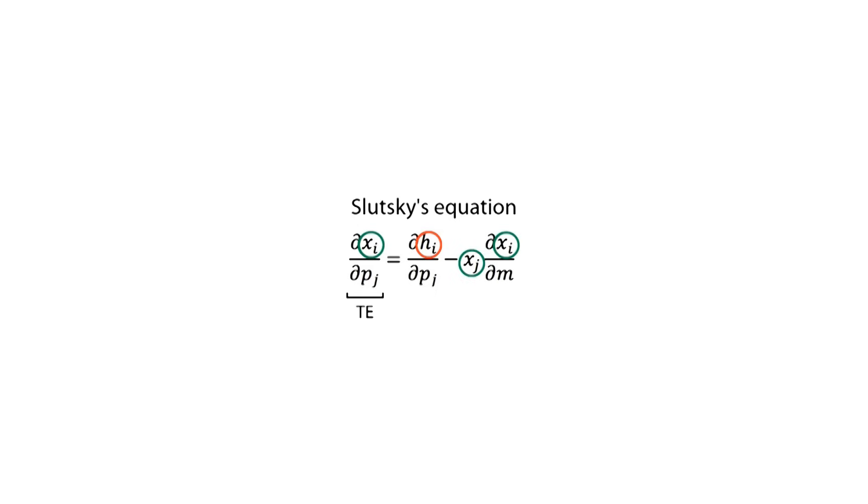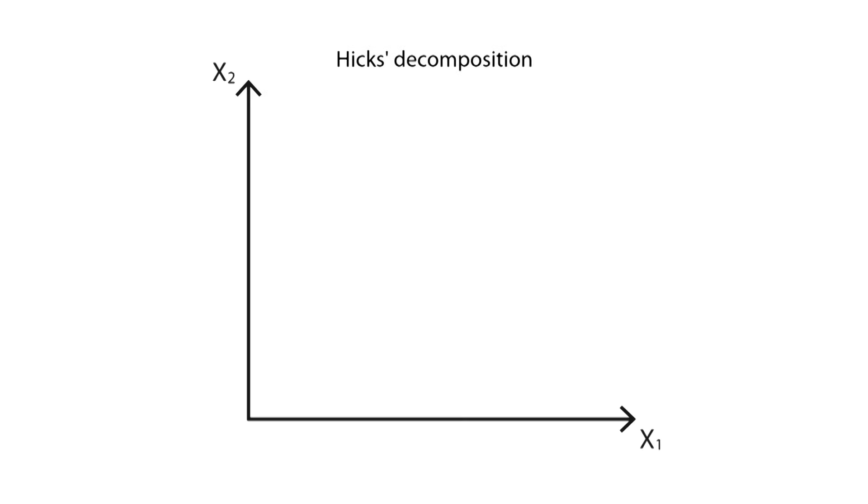The next part is the substitution effect, which is how much the variation is due to us finding similar options. This effect is obtained from the derivative of the Hicksian demand with respect to price. The right-hand side is the income effect—in other words, how much changes in our purchasing power affect the amount we consume of a certain good. It is the derivative of the Marshallian demand with respect to income, multiplied by the Marshallian demand.